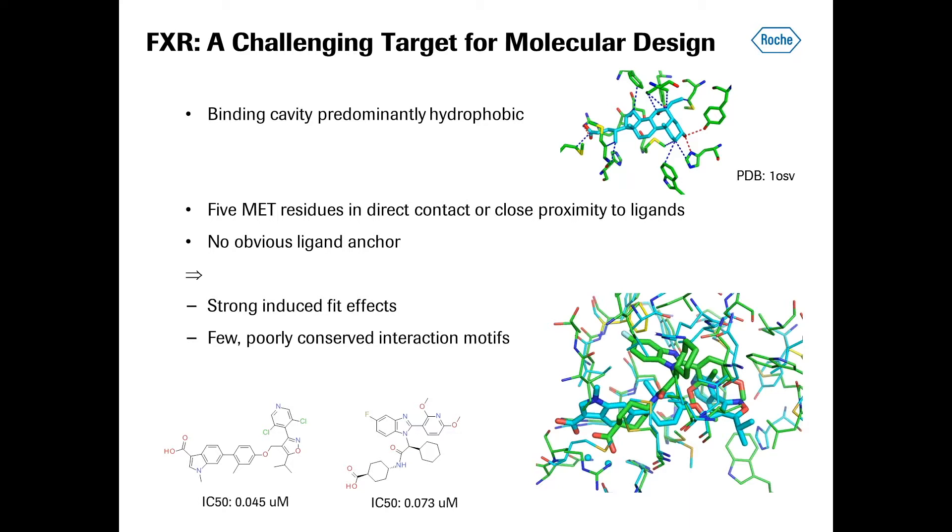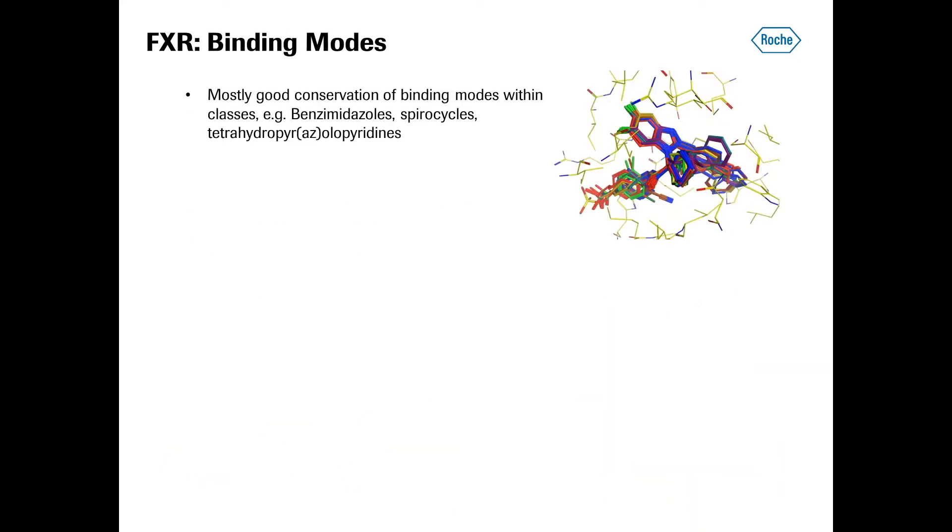These are additional challenges, which then led to strong induced fit effects that we observe, and only few and poorly conserved interaction motifs. That can be shown here in the overlay of two quite potent FXR inhibitors, which are 45 and 73 nanomolar, which share hardly any overlap of pharmacophore features. However, there is a little bit of conserved interaction motif. If there is a carboxylate or another negatively charged group present, then that typically goes to the bottom left of the binding site, as shown here. But the position of the carboxylate is not very well conserved in the different inhibitors.